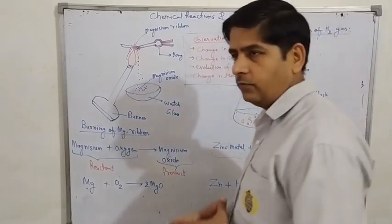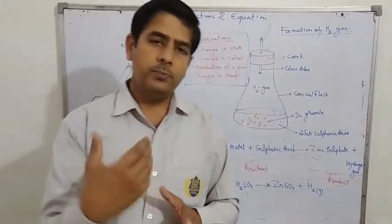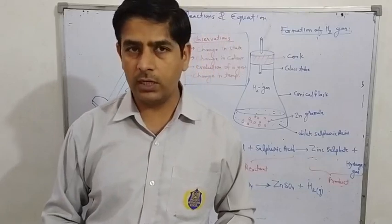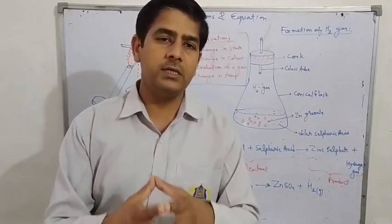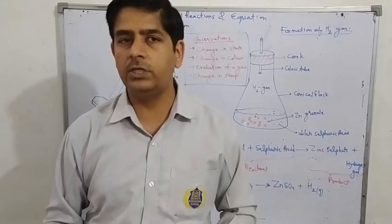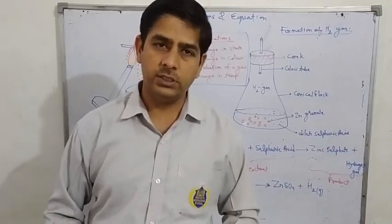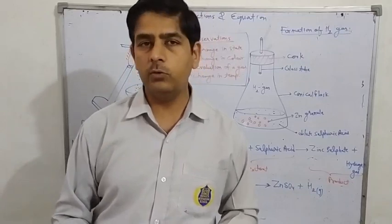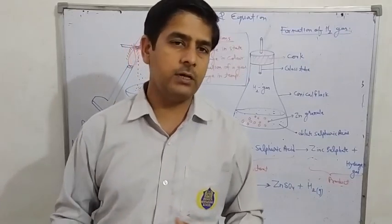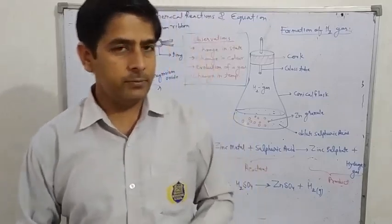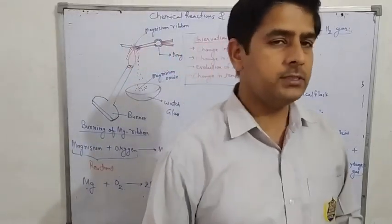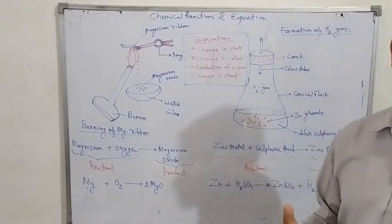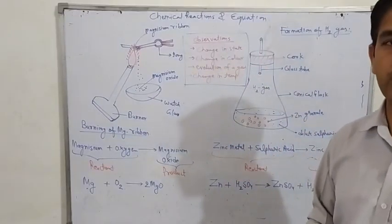If you observe these four changes — change in state, change in colour, evolution of gas, and change in temperature — during a process, you can easily identify that it is an example of a chemical change. To express this chemical change in a systematic way, we use a chemical equation.